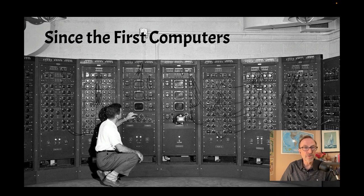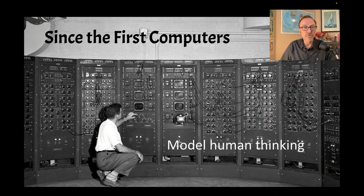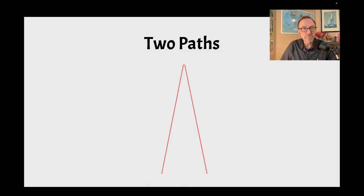Back since the earliest computers in the mid-40s, people were trying to figure out how to model human thinking. It seems only reasonable. To grossly oversimplify and tell the story, this followed two paths.